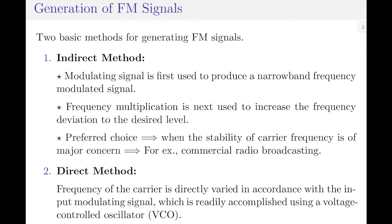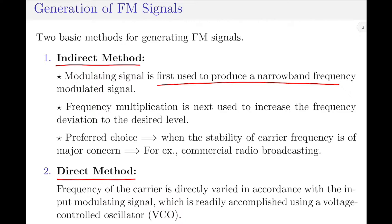Before I start the direct method of frequency modulated signal generation, let me give a very brief introduction to generation of FM signals itself. There are basically 2 methods of FM signal generation: indirect method and direct method. In indirect method, the modulating signal is first used to produce a narrow band frequency modulated signal, and then frequency multiplication is performed to increase the frequency deviation to a desired level. Whenever the stability of the carrier frequency is of major concern, we select the indirect method.